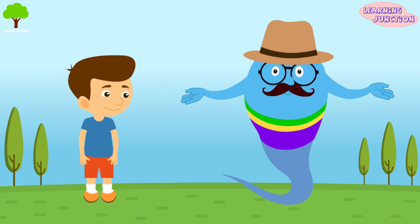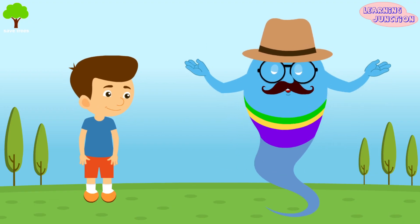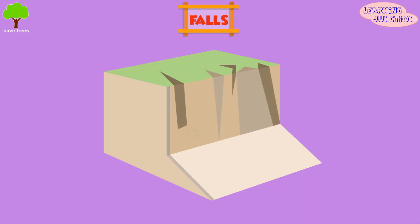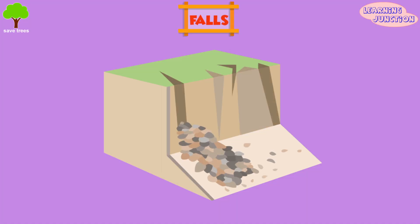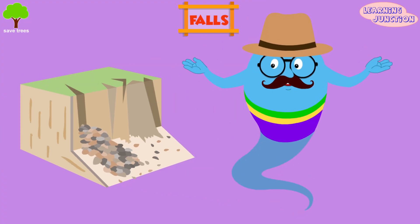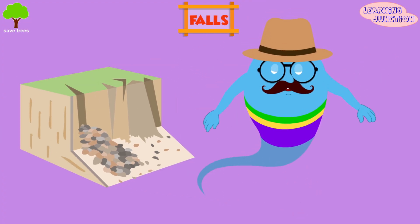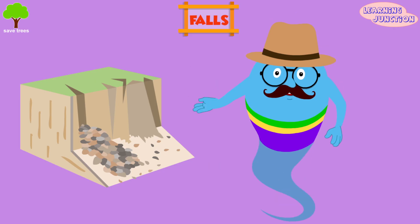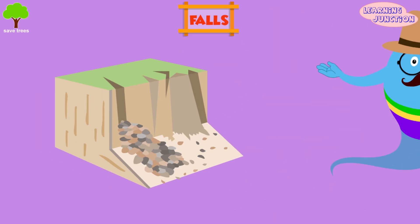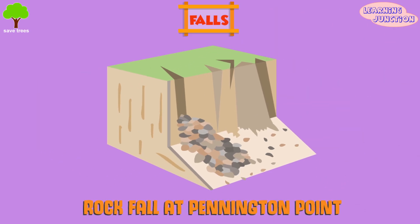Let me show you the various types of landslides. Falls: these are sudden movements of large amounts of soil, rock, and debris that break away from cliffs and slopes. Such landslides occur as the result of earthquakes, weathering, and the force of gravity. For example, rock fall at Pennington Point.